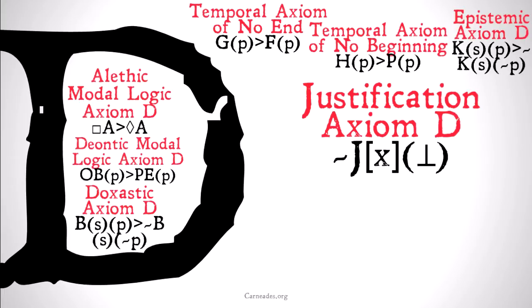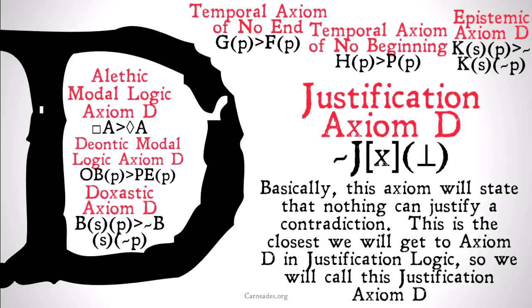Justification axiom D is going to look a little bit different. Basically what this is saying is it's not the case that any x — any piece of information — justifies a contradiction. Remembering that the upside-down T means a contradiction.